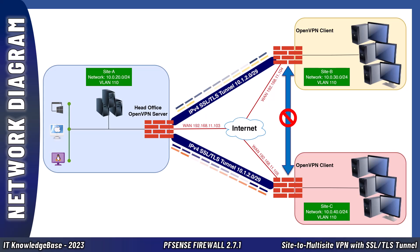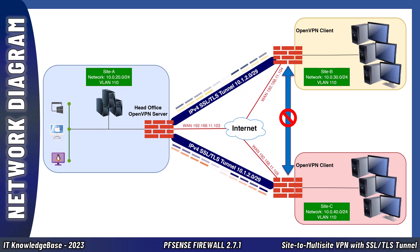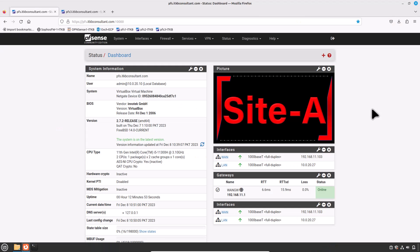I am using the most updated version of PFSense firewall, 2.7.2 release, which is the most updated version at the time of this recording. Now let's start. We need to jump to the head office PFSense firewall to generate a certificate for Site C, then export the necessary certificates along with the CA.